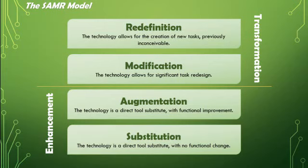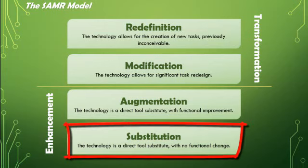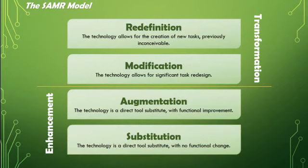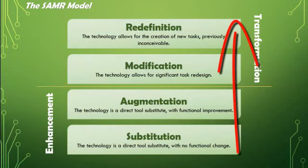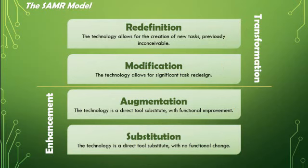Everyone has to start somewhere, and the bottom rung of the SAMR model is called substitution. A lot of us are at, or have spent a fair amount of time on, this rung, which is a great place to start, but it's not our end goal, as the SAMR model helps us to see. We should always view each rung along the way as a state of transition towards the next level, to progress towards more meaningful uses of technology that transform the way students learn.